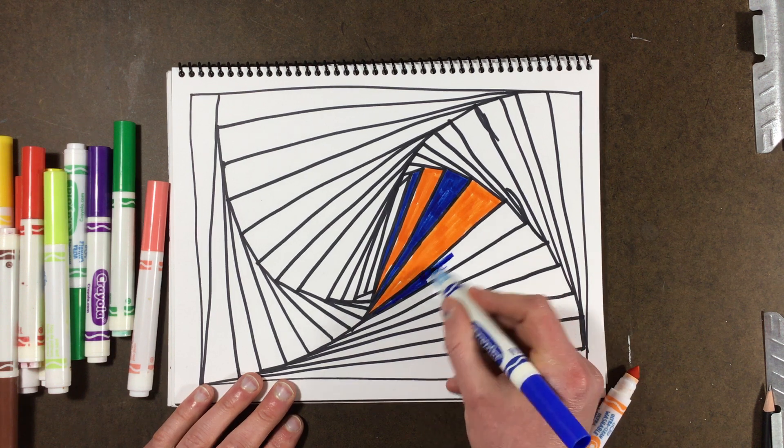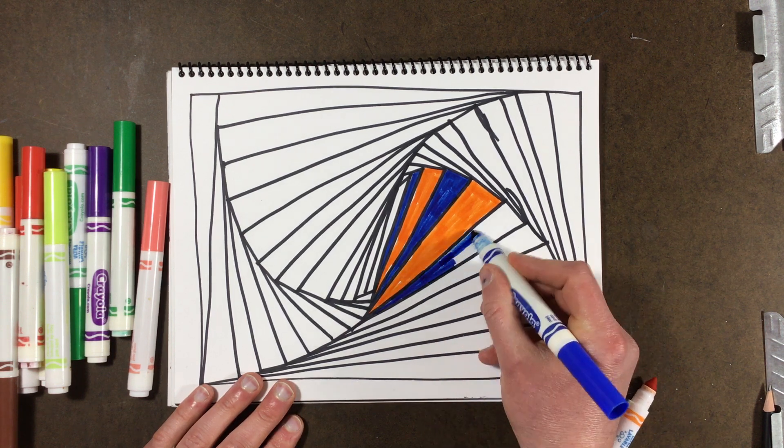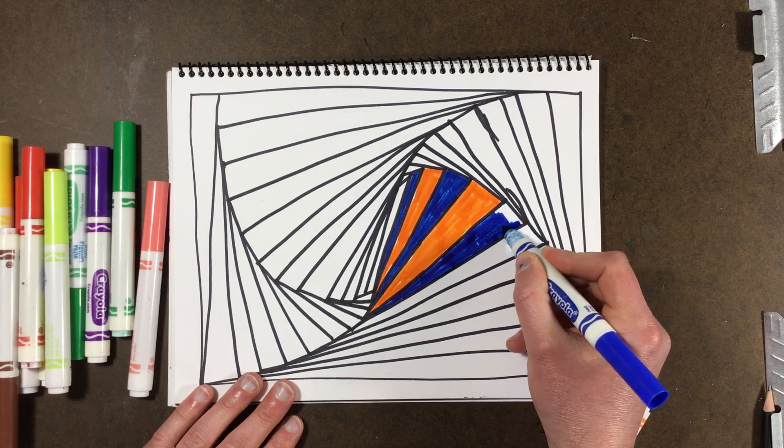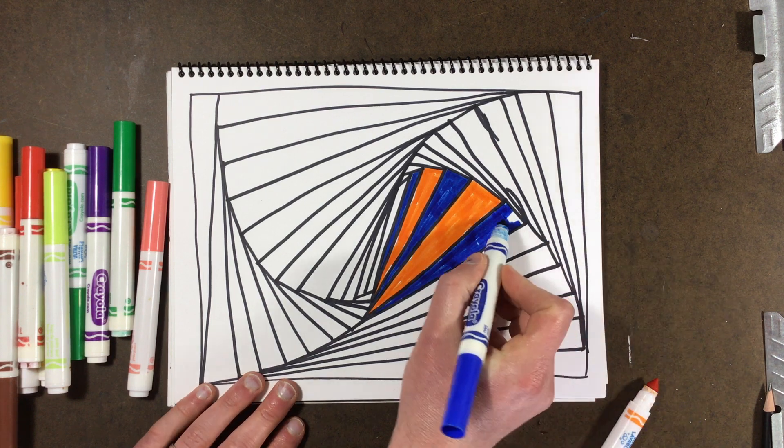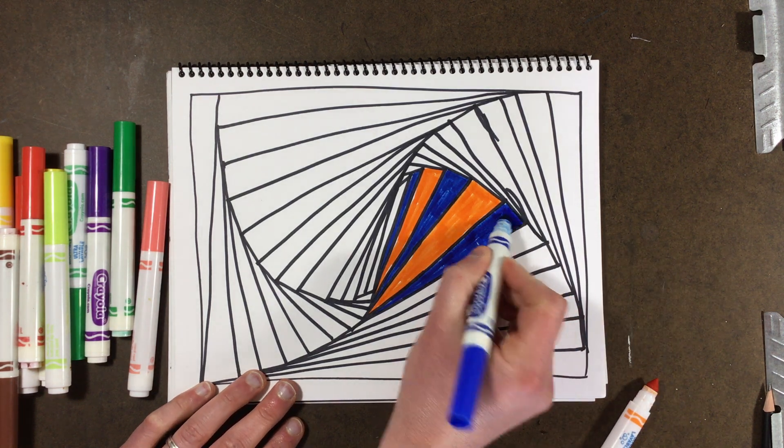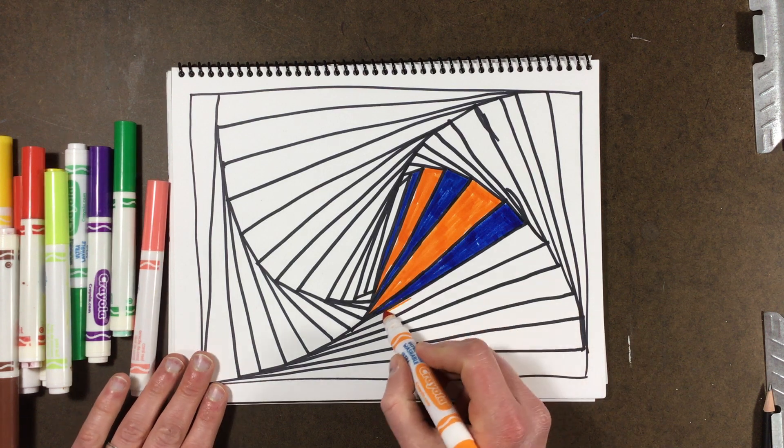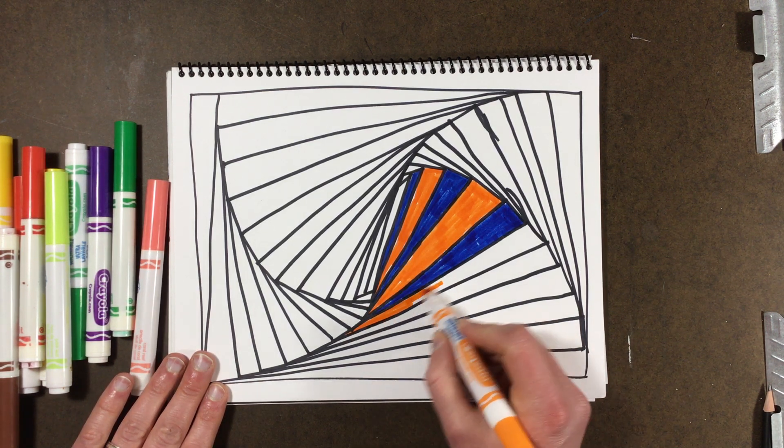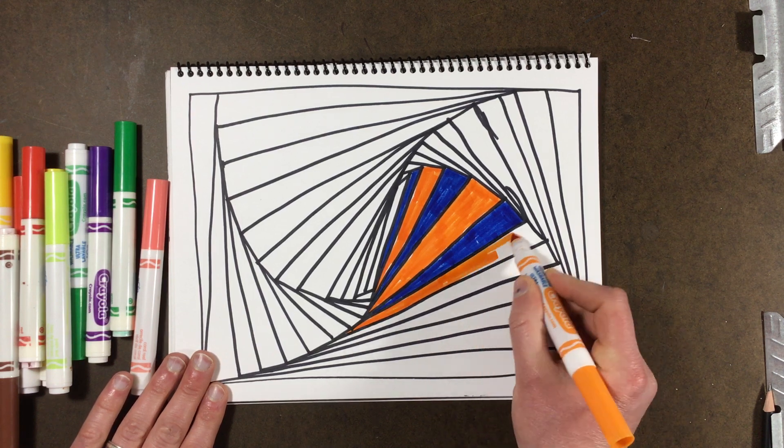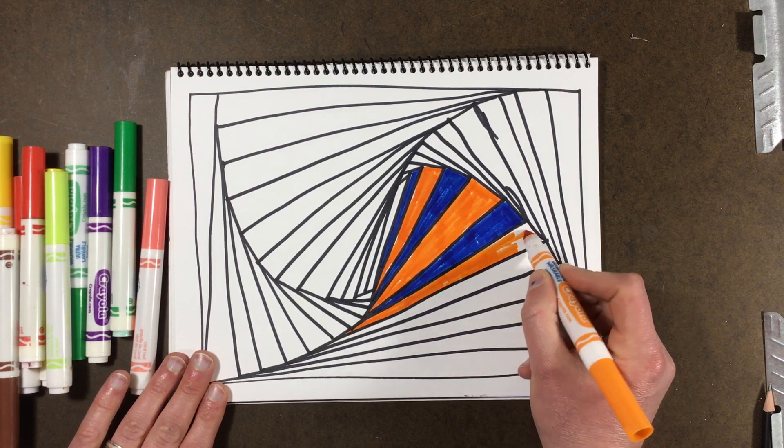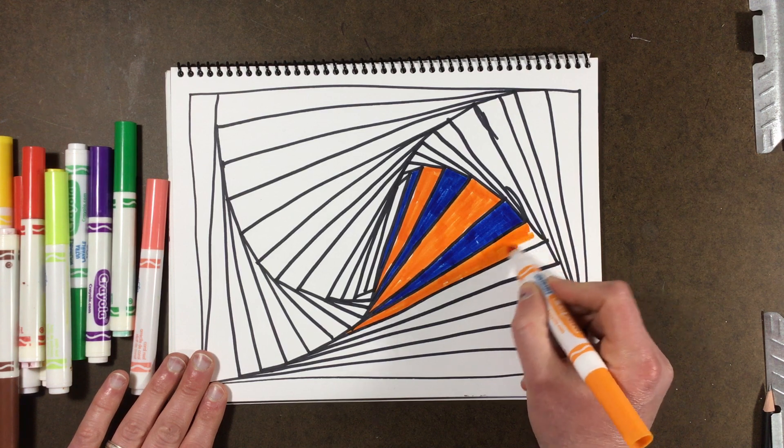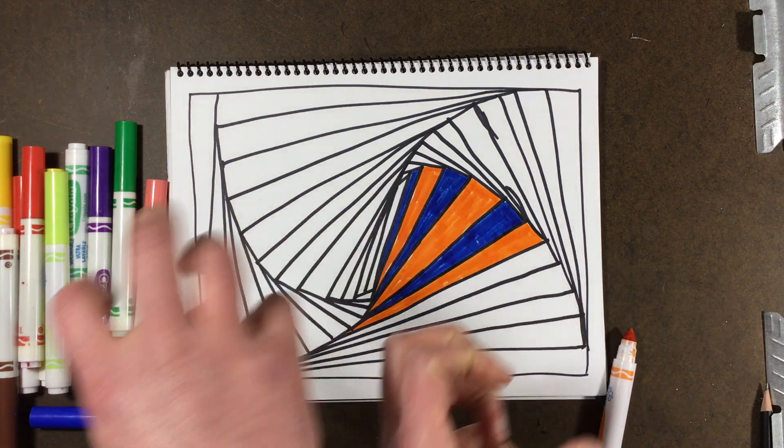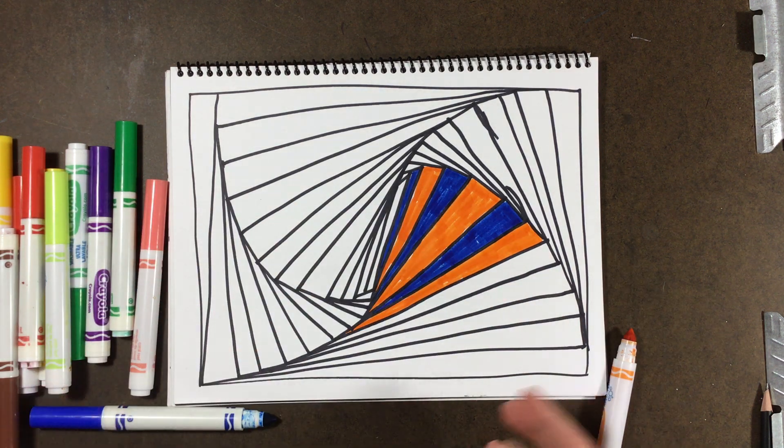You keep going back and forth with your colors and you'll color the whole thing in. Once you do that, you'll have a really cool piece of op art with that twisting illusion. What I'm going to do is use a different set of colors for the other two sides.